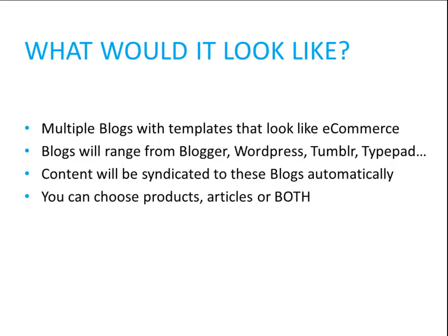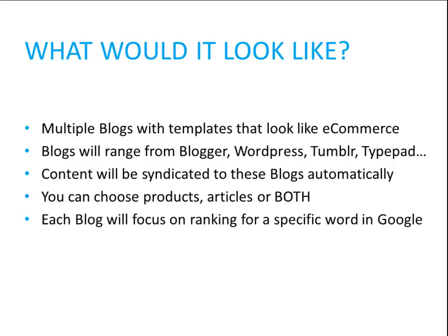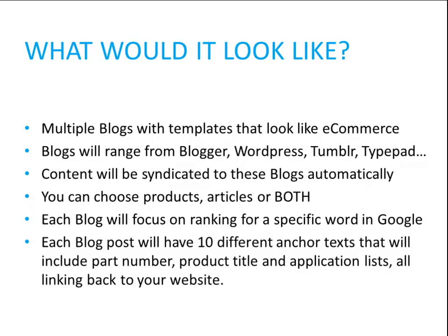You can choose the products or articles or both from your store, and that content will be syndicated to those blogs for you. Each blog will focus on ranking for a specific word in Google. For example, you would have wheelandtirepackages.blogspot.com, which is trying to rank for the word 'wheelandtirepackages.' Each blog will have 10 different anchor texts that will include a part number, a product title, application lists, and all of these anchor texts are going to be linking back to your website accordingly — some going to your homepage, some to your product page, some to your article.